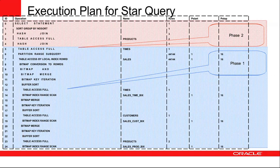You may notice that only two dimension tables are listed in phase two, not three — the customer table is not listed in our join-back scenario. The reason is that we did not select anything from the customer table in the select list of the query, so there was no need to join back to it to retrieve additional information to answer the query. Oracle is smart enough to eliminate that join because it's not necessary, and in this case we only join back to time and products.